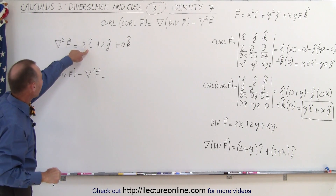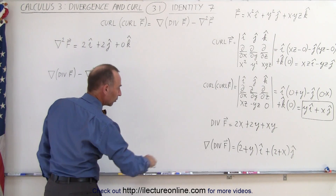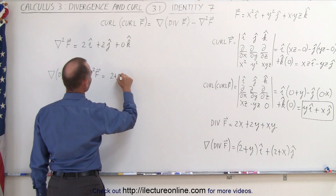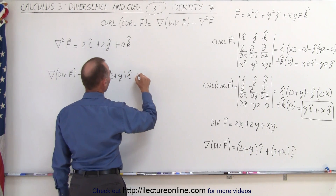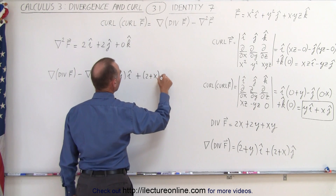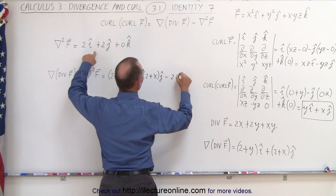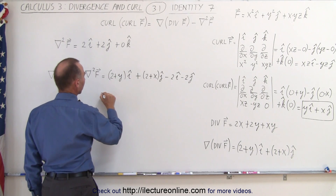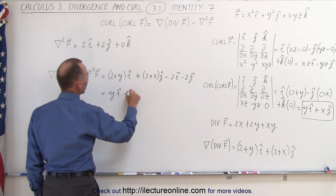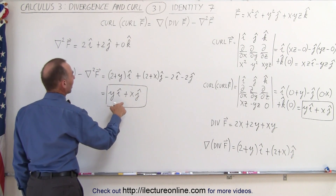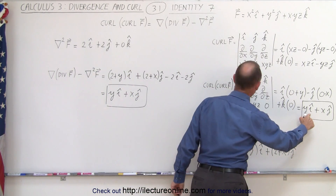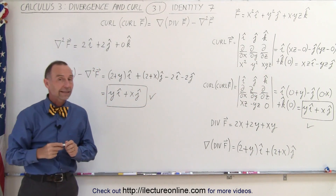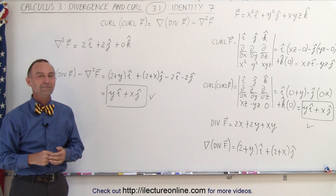Now we subtract the Laplacian result from the gradient of the divergence and see what we get. We have 2 plus Y in the I direction and 2 plus X in the J direction, and we subtract 2I and 2J. The 2's cancel, and we end up with Y in the I direction plus X in the J direction — exactly the same as what we got on the left side. So yes, the identity does hold in this particular instance, and that is identity number 7.